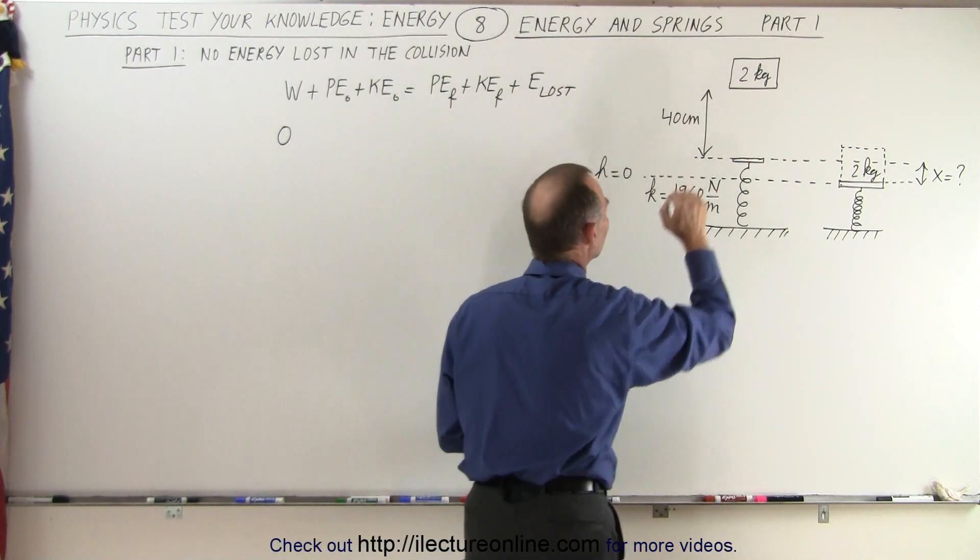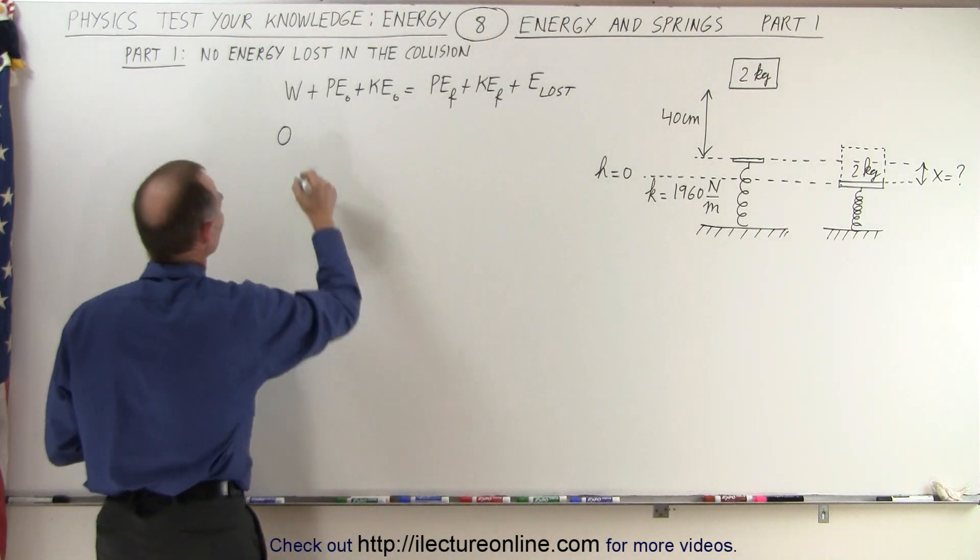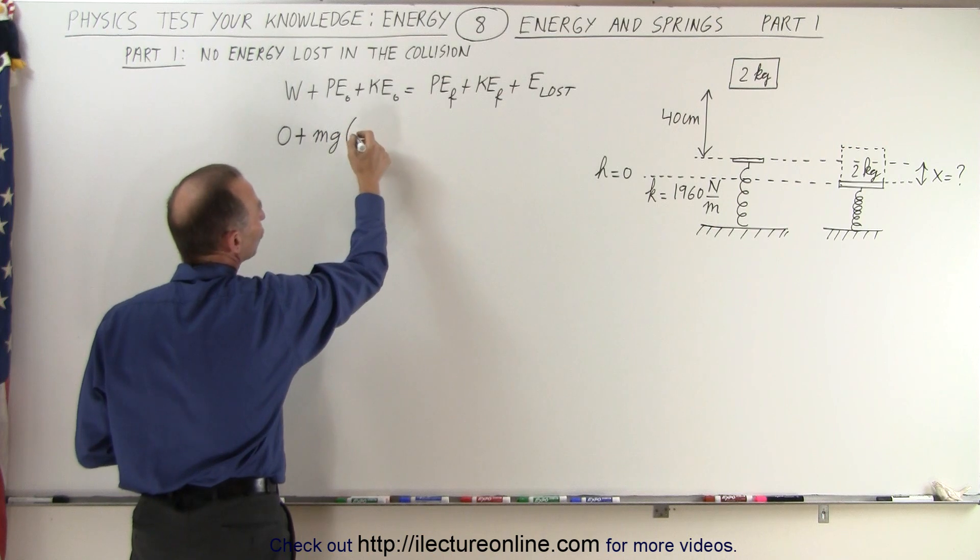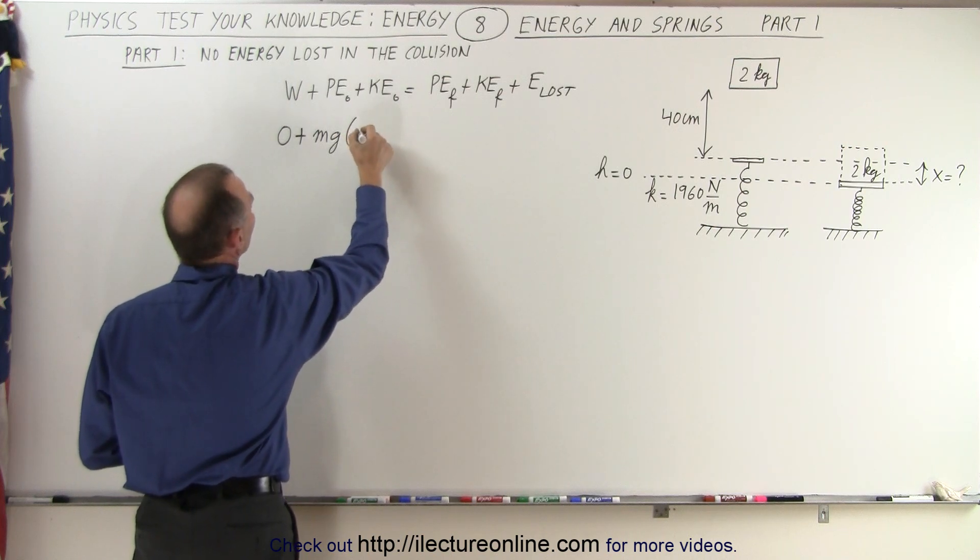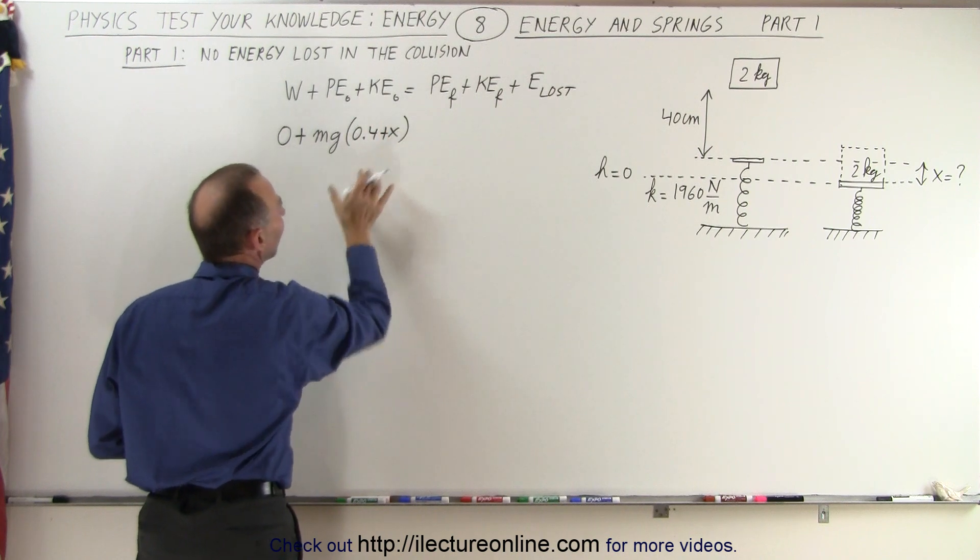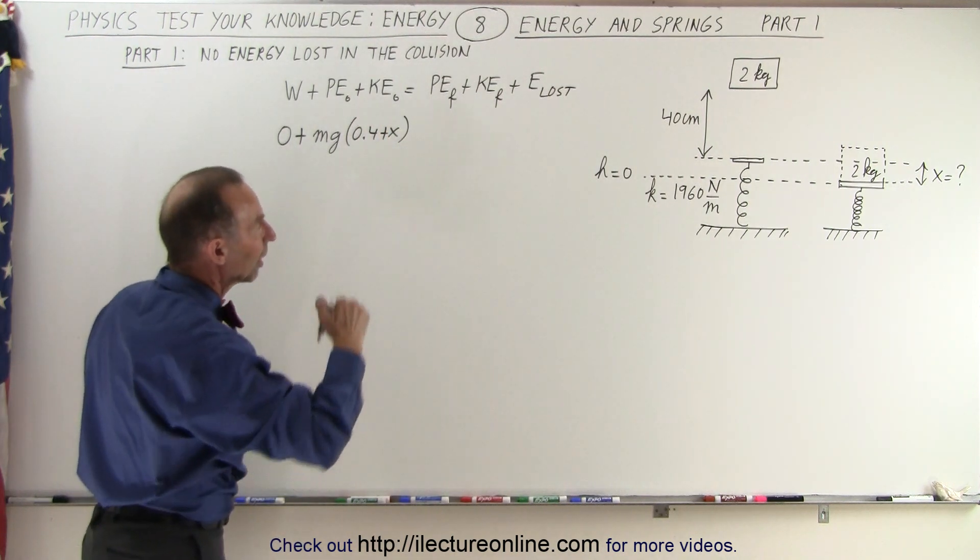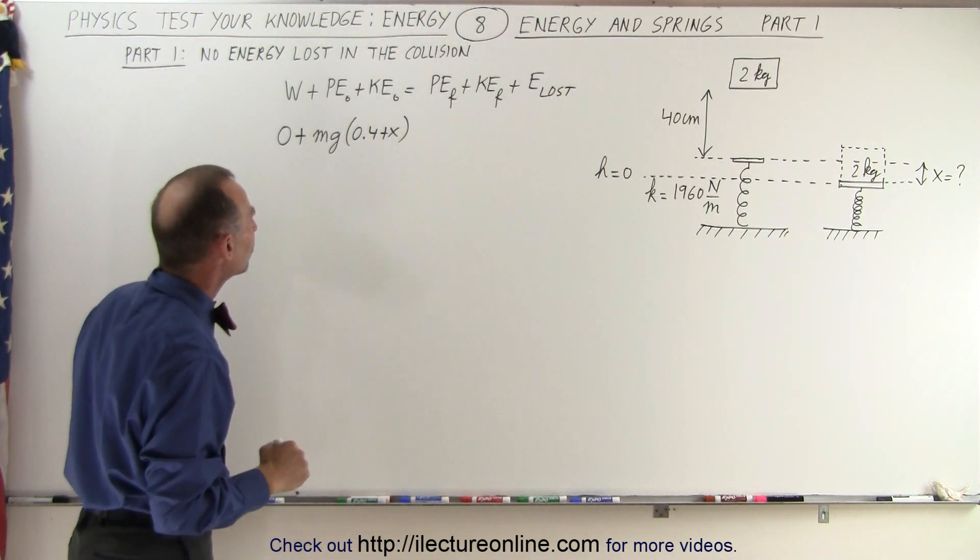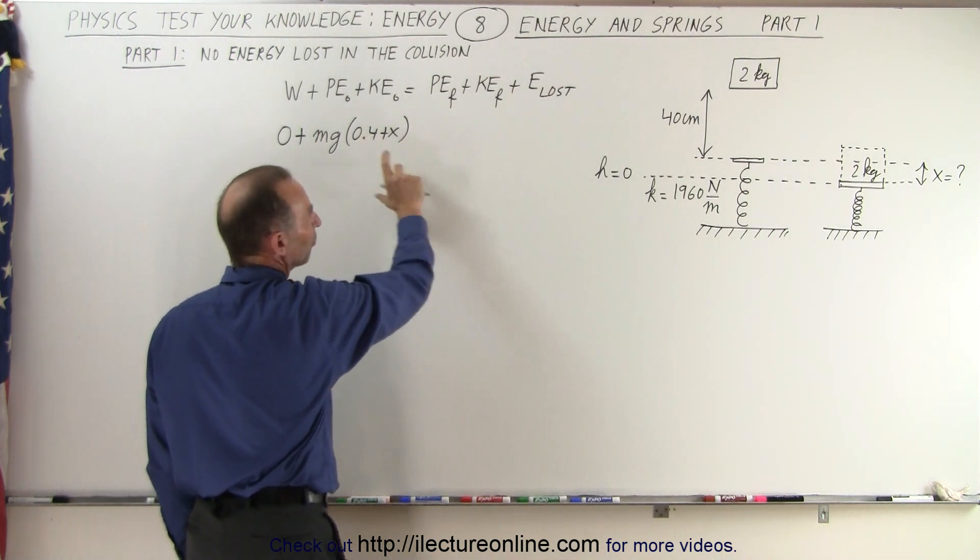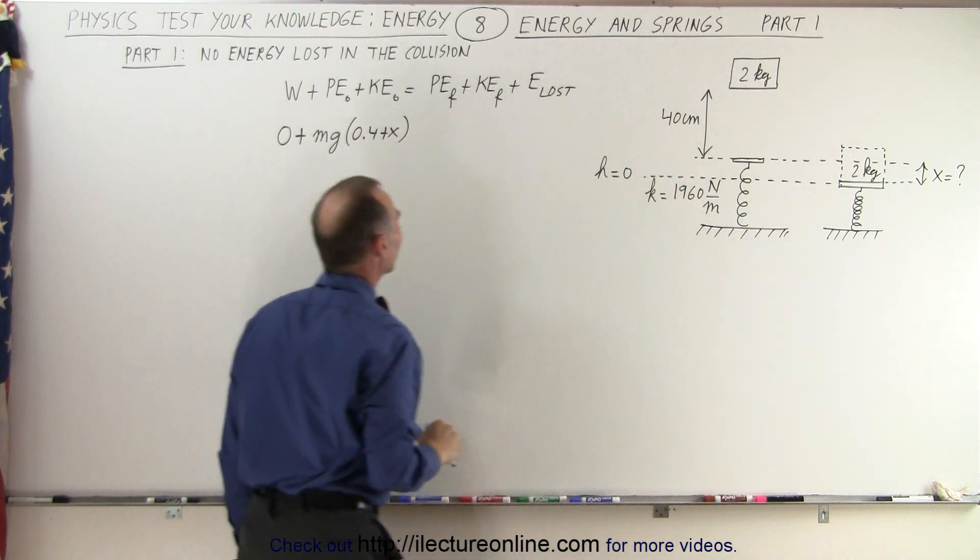Which means that the original potential energy has to have a reference point down to here. So that means that the potential energy initial would be m times g times h. That would be 0.4 plus x for being the height above the reference height h equals zero. In this case, h would be 0.4 plus the additional x.